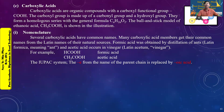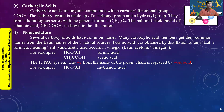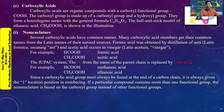The first step in IUPAC naming is to replace the terminal -e with -oic acid. The COOH group must always be at the end of the carbon chain, and it is always given position number 1.